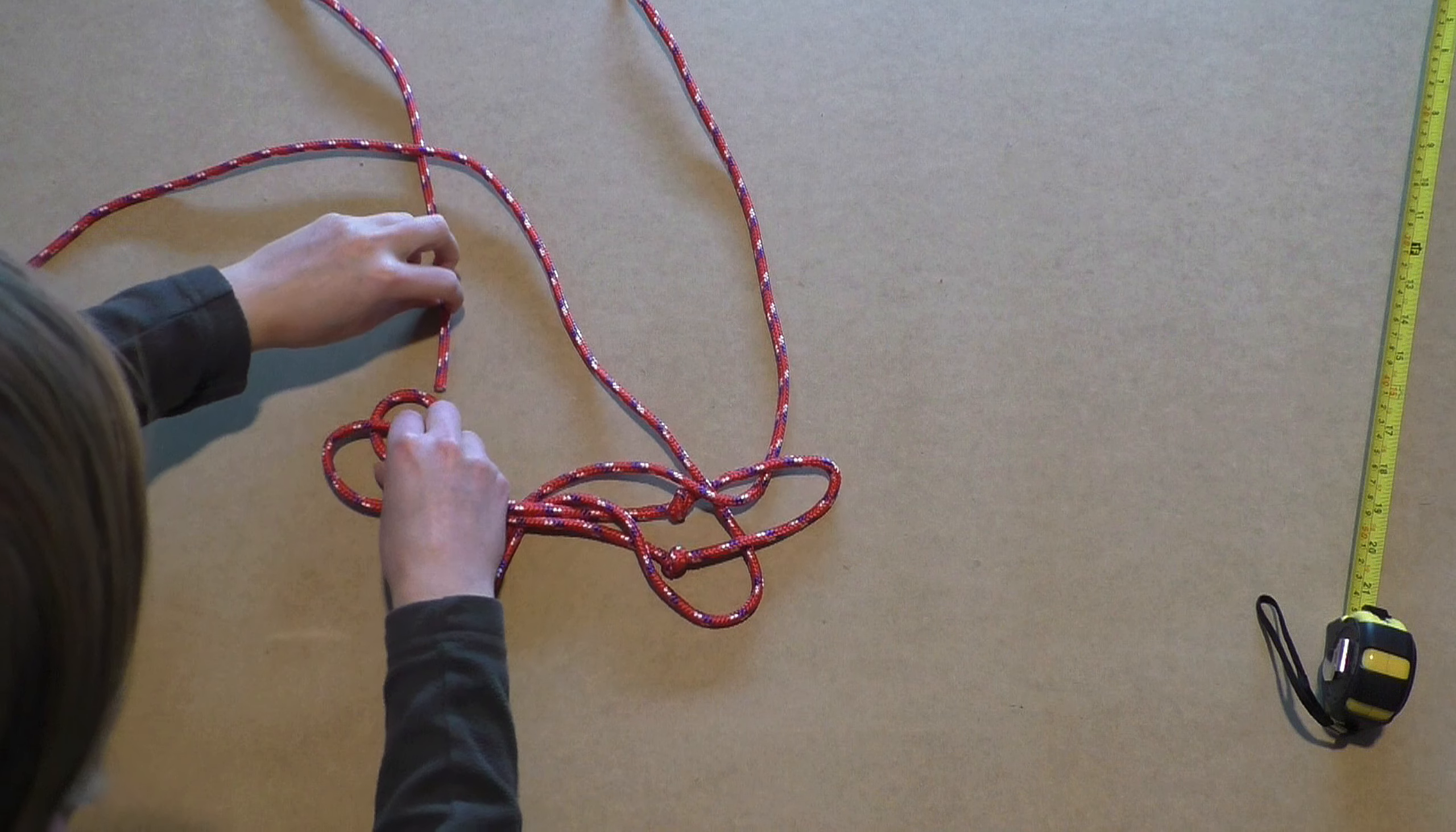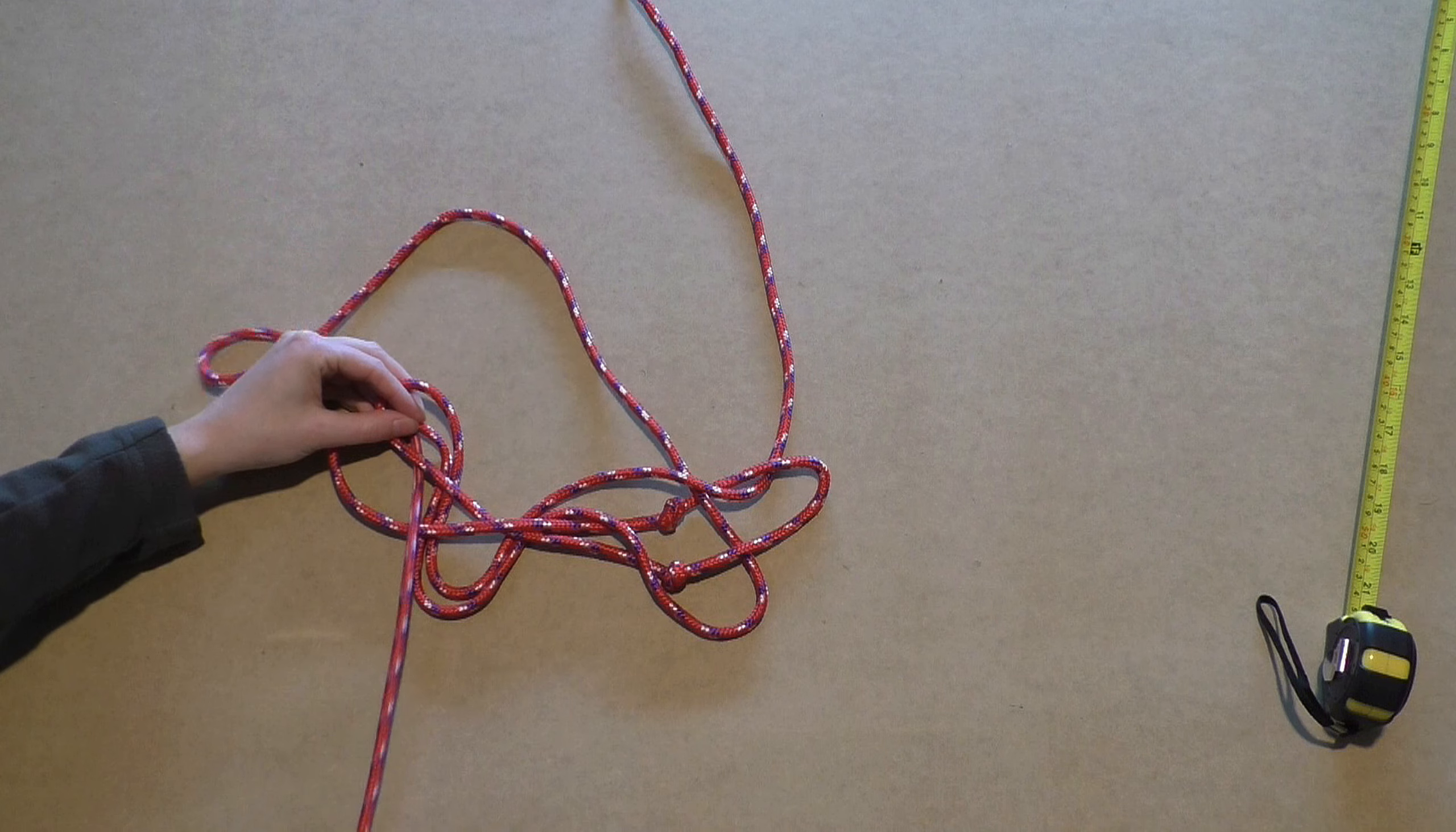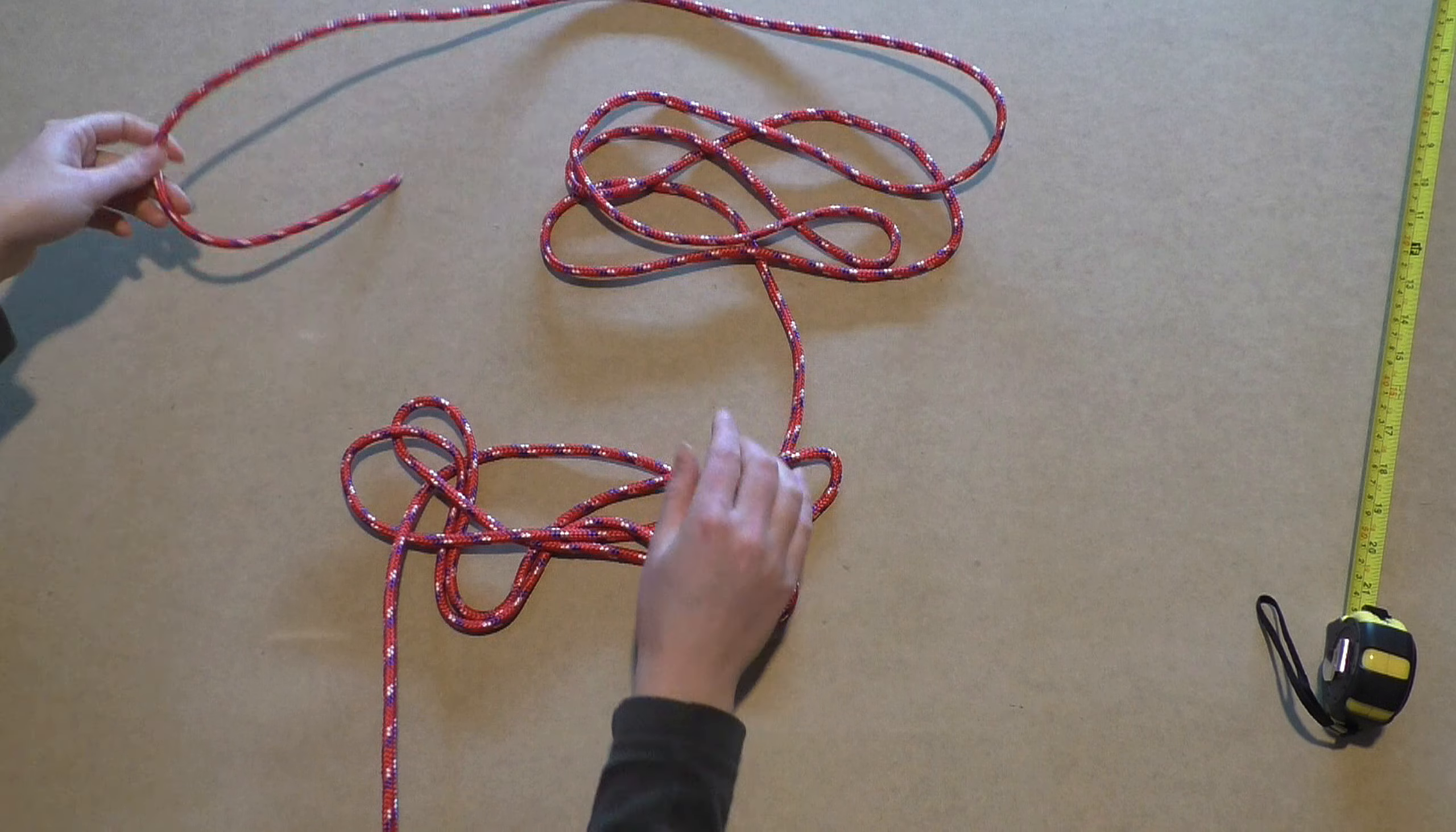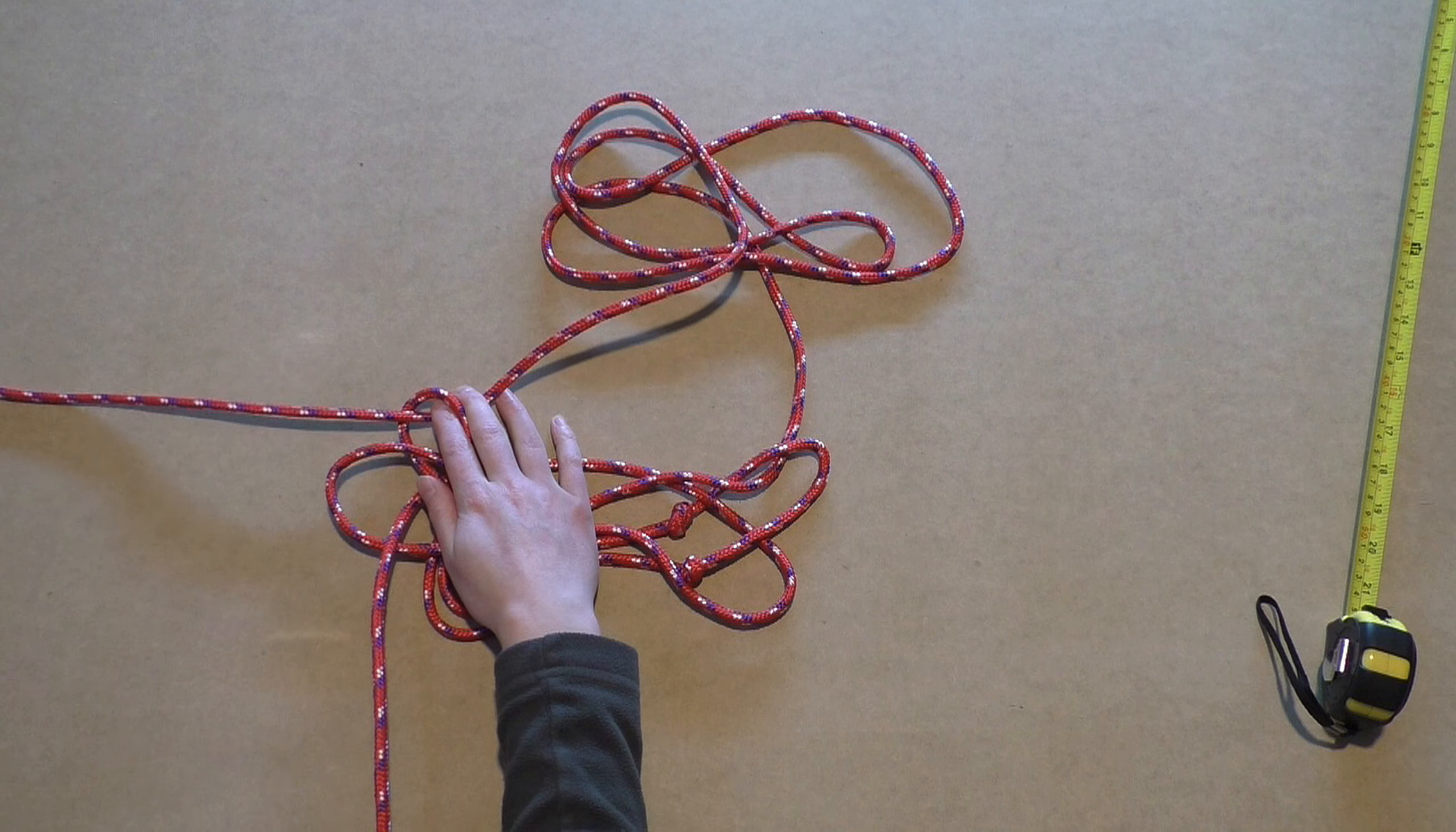Take the shorter end and bring it underneath the first three ropes of the left loops and over the last rope. Now take the longer end and feed it just underneath the first rope of the left loops.